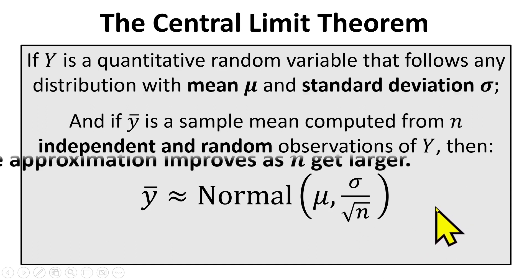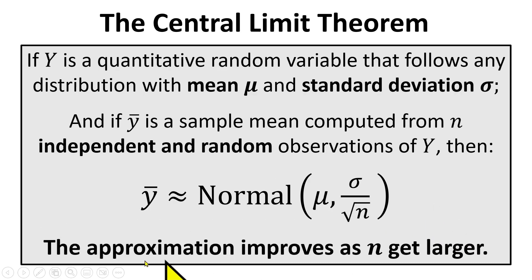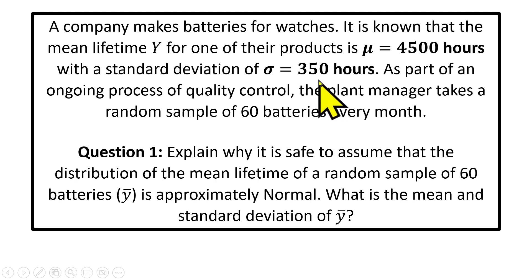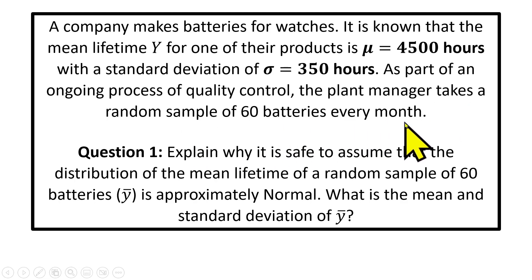And of course, we must always remember the approximation here gets better as the sample size gets larger. So here's the scenario: we're pretending that we have a company that makes batteries for watches. It is known that the mean lifetime for one individual battery is 4,500 hours with a standard deviation of 350 hours. As part of an ongoing process of quality control, the plant manager takes a random sample of 60 batteries every month and then checks out the average lifetime of those 60 batteries.